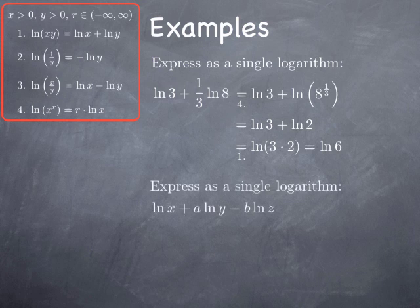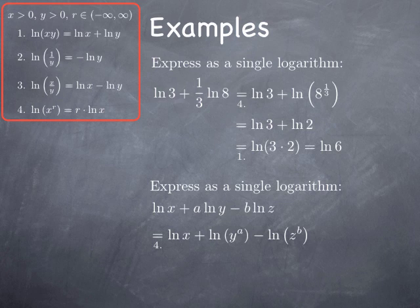Similarly, to express ln(x) plus a times ln(y) minus b times ln(z) as a single logarithm, we use Law 4 to bring the multiplicative constants a and b inside as powers: ln(x) plus ln(y^a) minus ln(z^b). Then Laws 1 and 3 combine these: a sum gives log of a product and a difference gives log of a quotient, so we obtain ln(x times y^a divided by z^b). We'll see more about the natural log function in the next video.